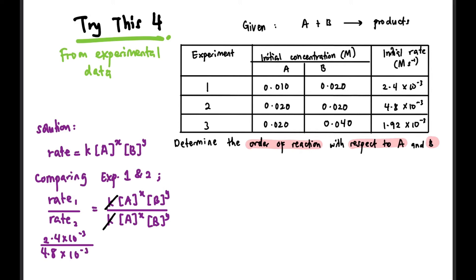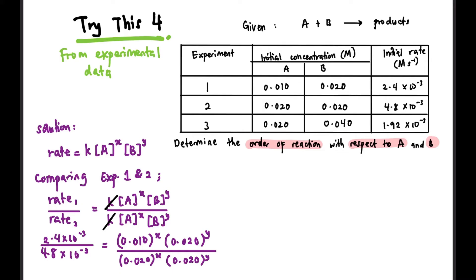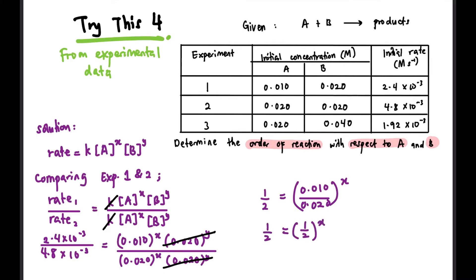The rate constant K is the same regardless of the equation, so we can cancel it out. We substitute the values from the table — rate 1 and rate 2 from the table. Then concentration of A from experiment 1 is 0.010 to the power of X, and B is 0.020 to the power of Y. For experiment 2, the values are 0.020 to the power of X and 0.020 to the power of Y. Since B's concentration is maintained at 0.020 to the power of Y on both sides — exactly the same — we can cancel them out. Solving with the calculator, we get on the left side 1 over 2, and on the right side 0.010 over 0.020 to the power of X. We can combine and simplify to get 1 over 2 equals 1 over 2 to the power of X. By comparison, X equals 1.